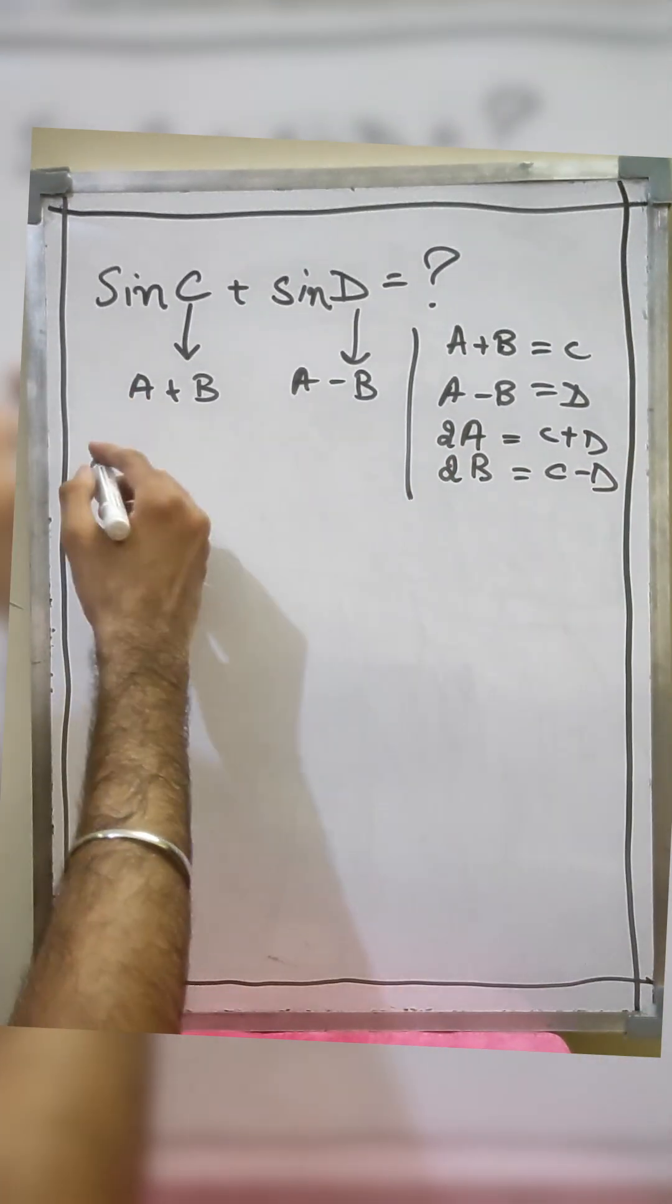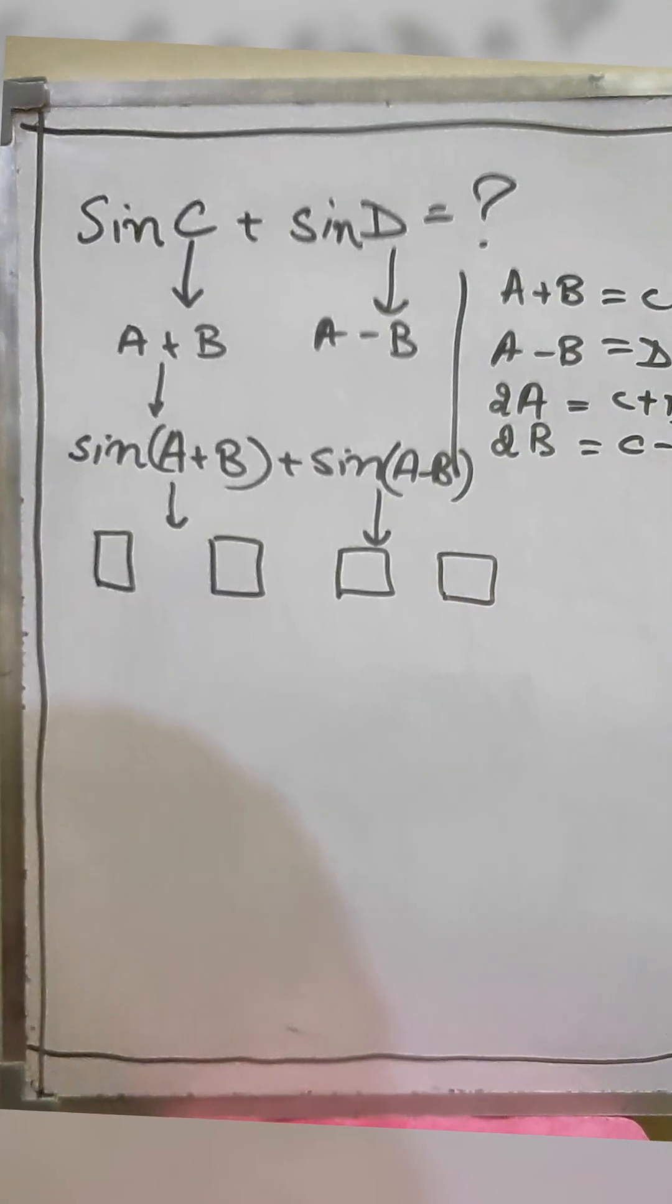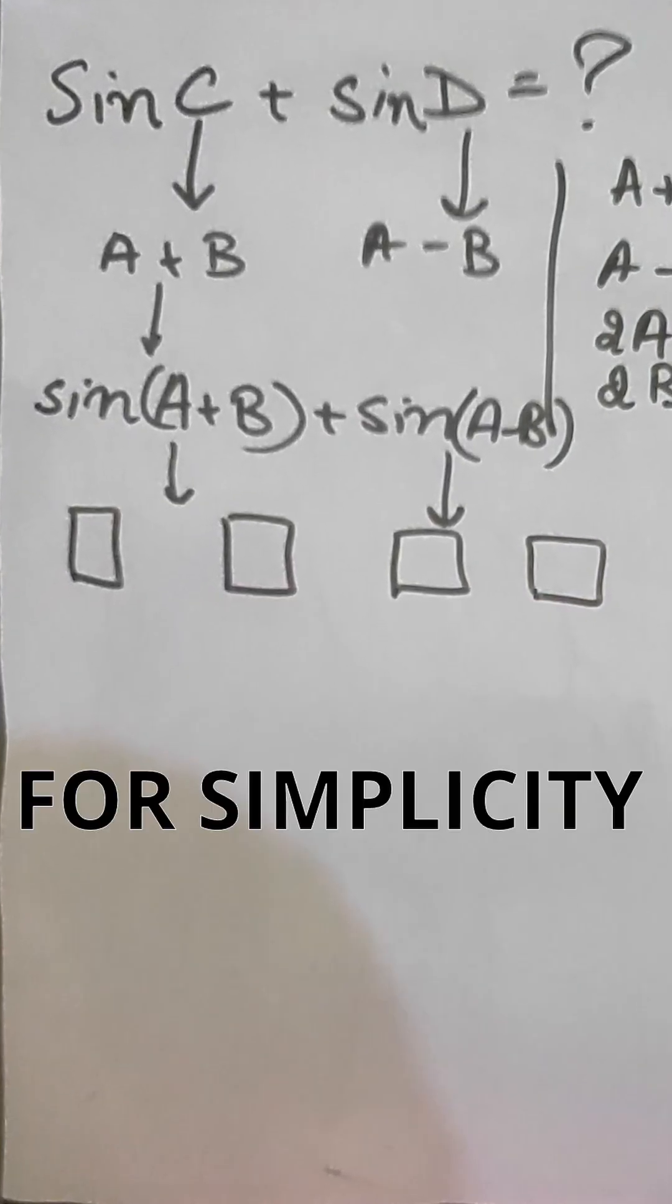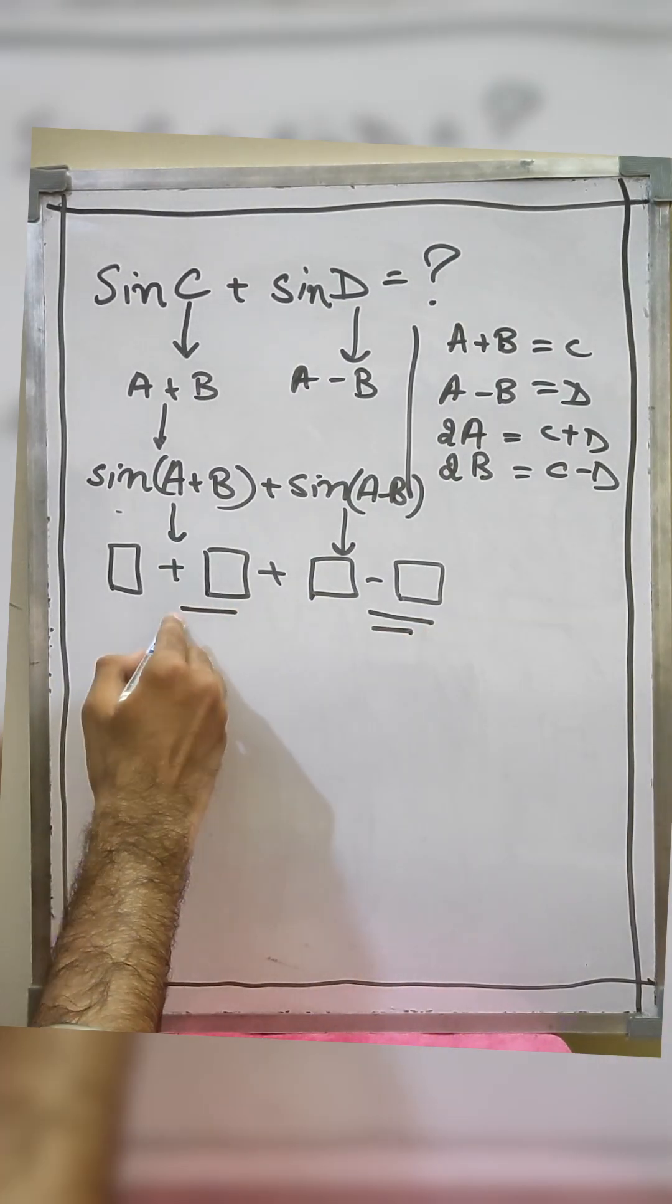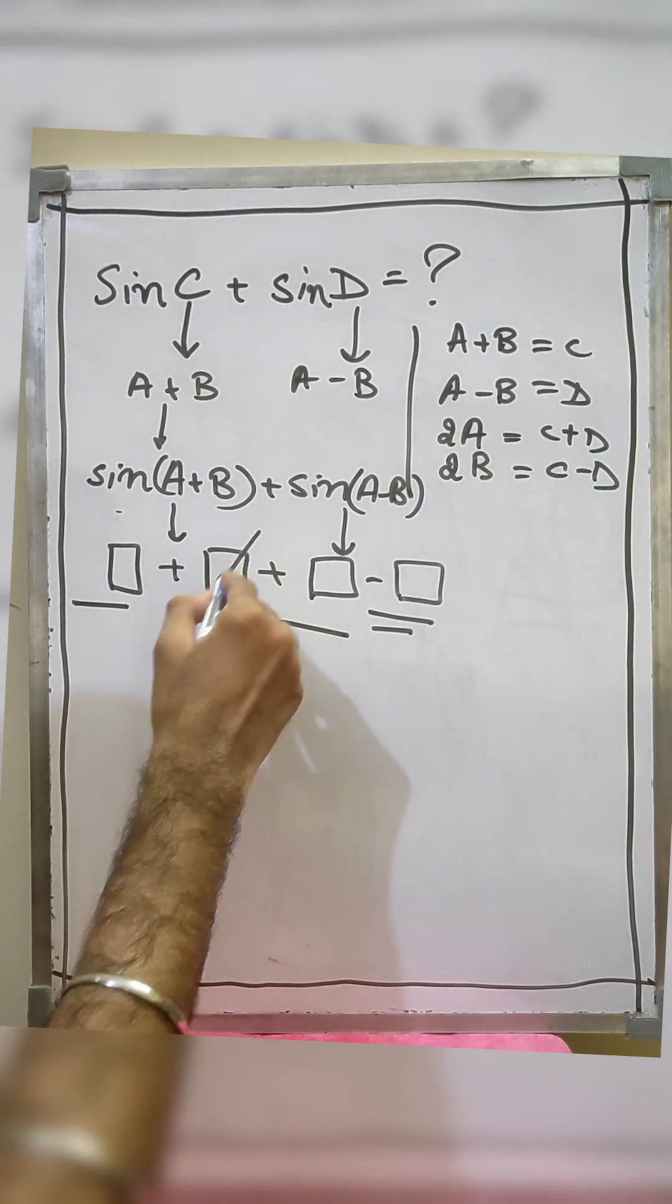Each expansion will give you two terms. Total of four terms. Let's call them a box for simplicity. These terms are identical. Therefore we are left with twice of a box.